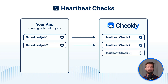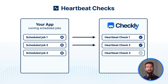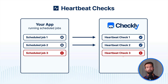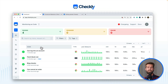And the same goes for the second one. Now if at any point in time your scheduled job fails to report back to Checkly, it will trigger an alert and we will let you know that something happened with your scheduled actions. So how can you create a new heartbeat in Checkly? Let's find out.